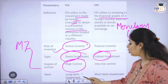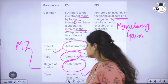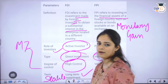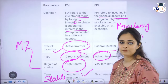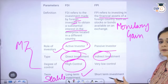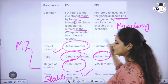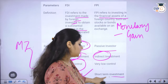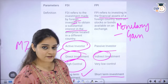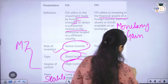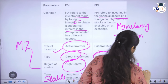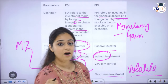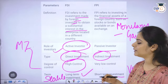FDI is a long-term investment and is also stable, since it is made for a long-term purpose. Since it is long-term, it is more stable. FPI, on the other hand, is made for short-term monetary gains, so this investment is short-term in purpose and is therefore more volatile.